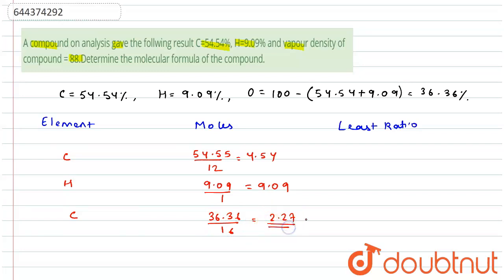Now here 2.27 is the least, so divide by least ratio. So 4.54 divided by 2.27 is equal to 2. 9.09 divided by 2.27 is equal to 4, and 2.27 divided by 2.27 is equal to 1.